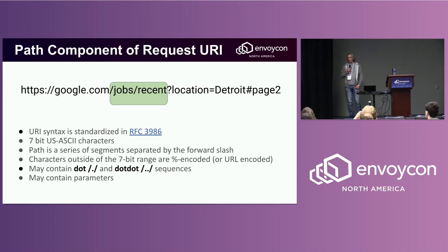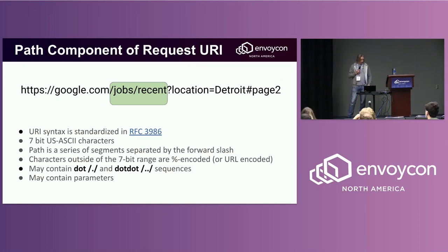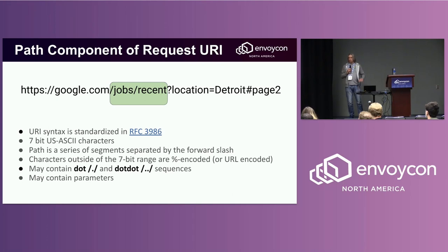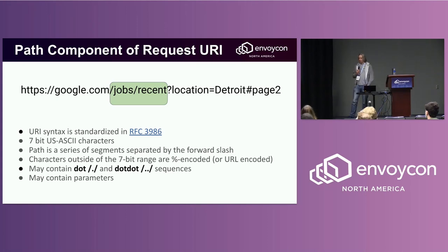Representation should use 7-bit ASCII characters, and everything else should be percent-encoded. It can contain dot and dot-dot segments, which work similarly to how they work in filesystem paths. It may also contain parameters.